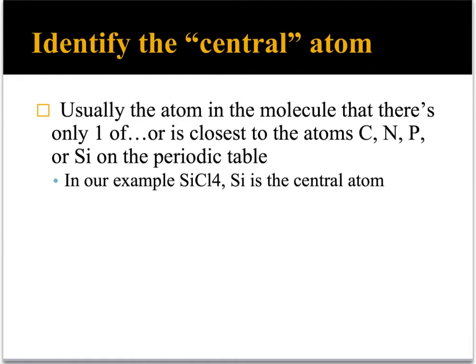The next step is to identify the atom that is central in the molecule. Usually it's the one that there's only one of, or it's closest to the atoms carbon, nitrogen, phosphorus, or silicon on the periodic table. In our example, silicon SiCl4, Si is the central atom. The other elements are going to arrange themselves around the silicon.